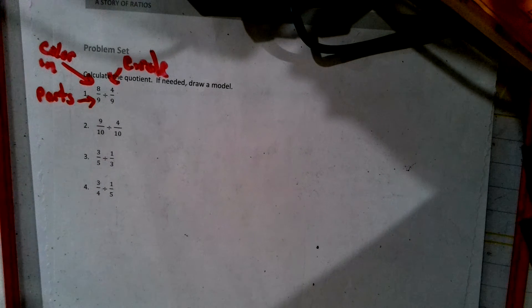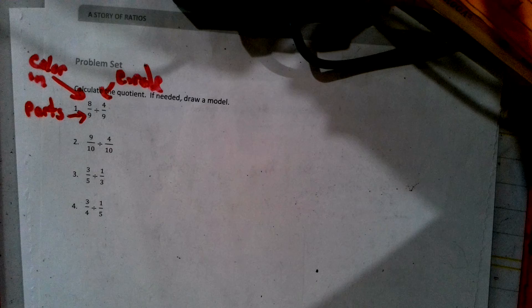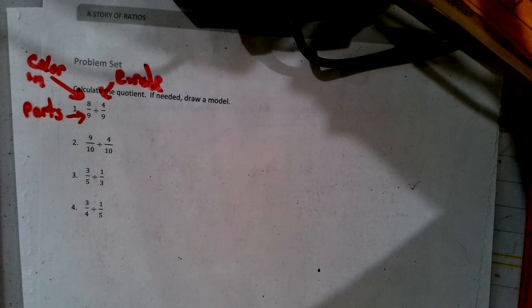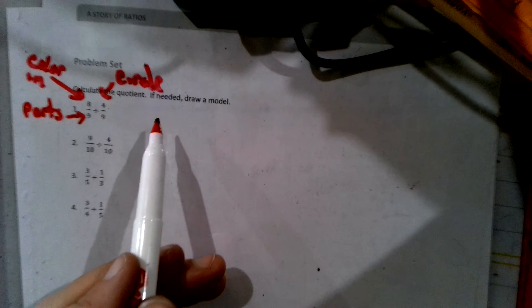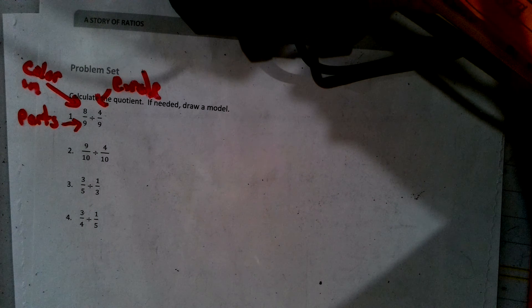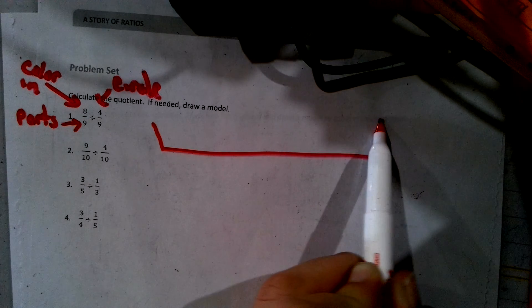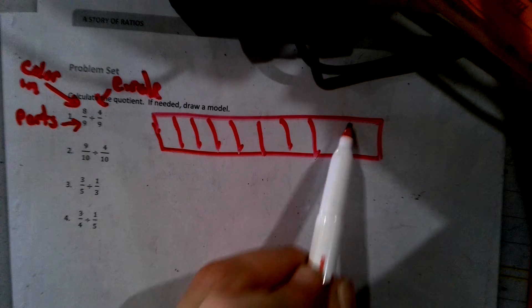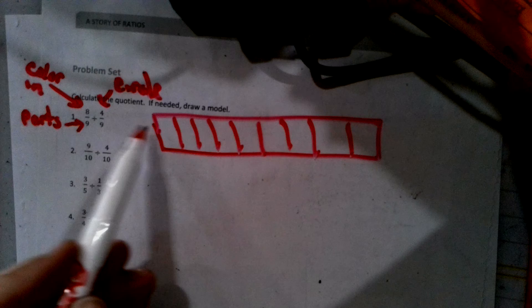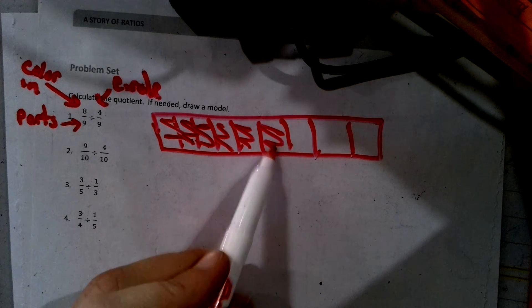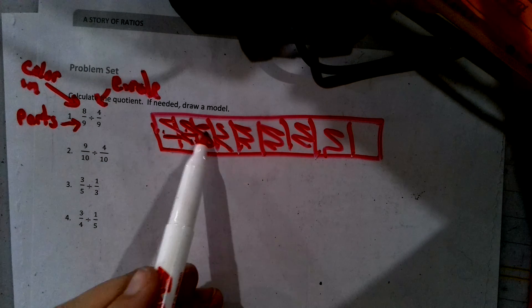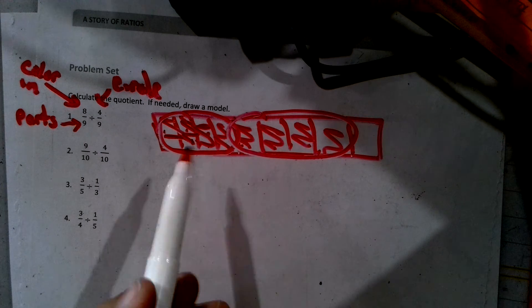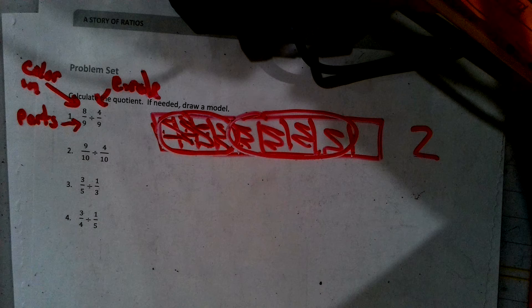I'm trying to get this as focused as possible. Not really sure why it keeps blurring in and out, but we're going with it. I got to make nine boxes. Five, nine. Try to make them roughly all the same size and we have to color in eight. And then we have to circle them in groups of four. One, two, three, four. One, two, three, four. We have no more to circle. So we have two wholes. So the answer to this question is two.